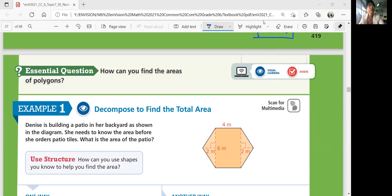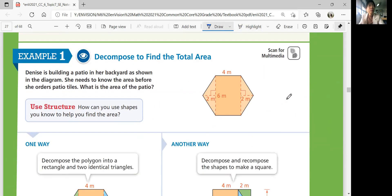Let's look at the next page. So in this lesson, let's think about how we can find areas of polygons. Example one, decompose to find the total area. Denise is building a patio in her backyard as shown in the diagram. She needs to know the area before she orders patio tiles. What is the area of the patio?